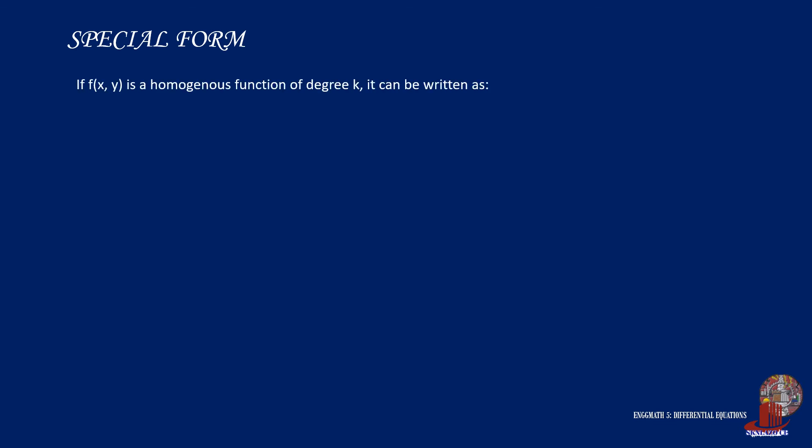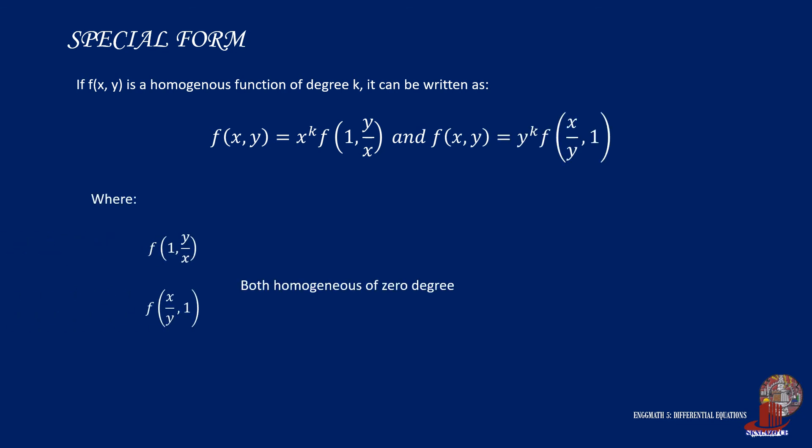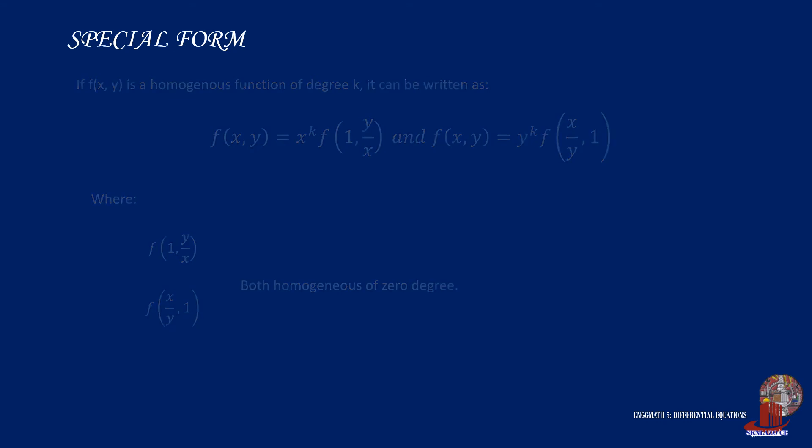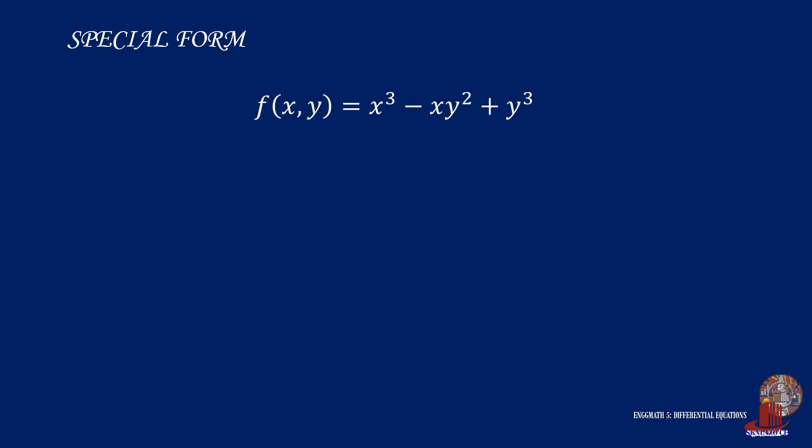Aside from the standard form of a homogeneous function, a special form is also considered: if a function f(x, y) is homogeneous of degree k, it can be written as x^k · f(1, y/x), and equivalently as y^k · f(x/y, 1). This special form checks both partial substitutions to confirm the function is homogeneous of degree zero. Let's apply this to the previously checked function x³ - xy² + y³.